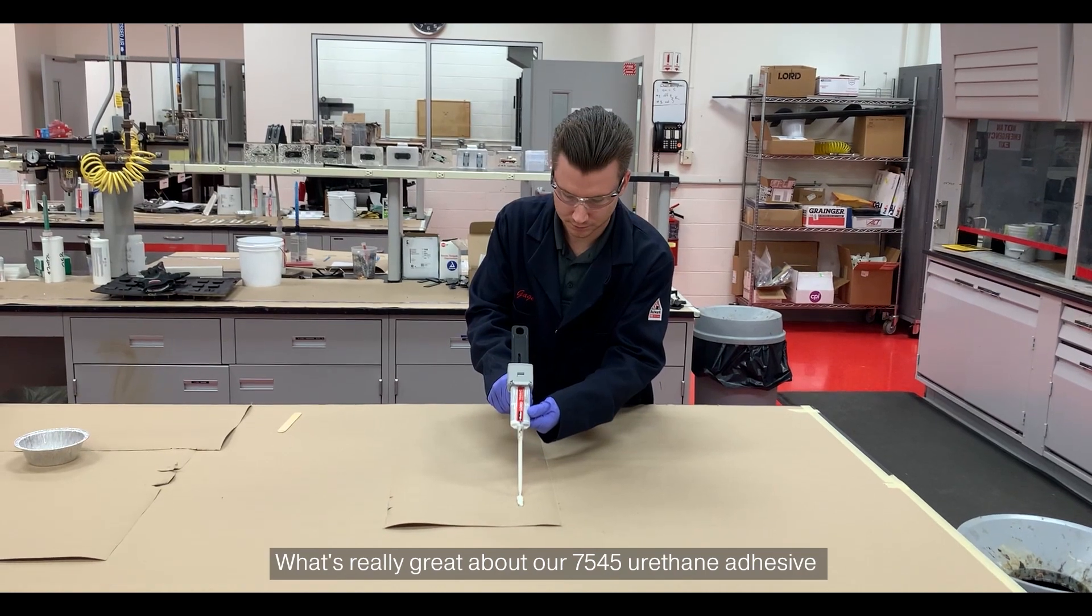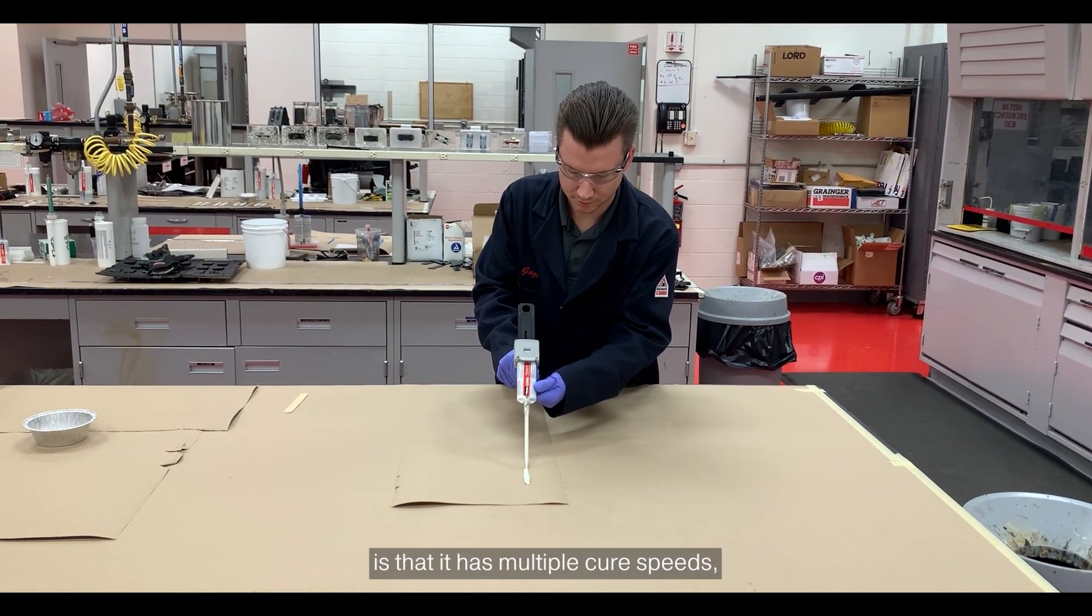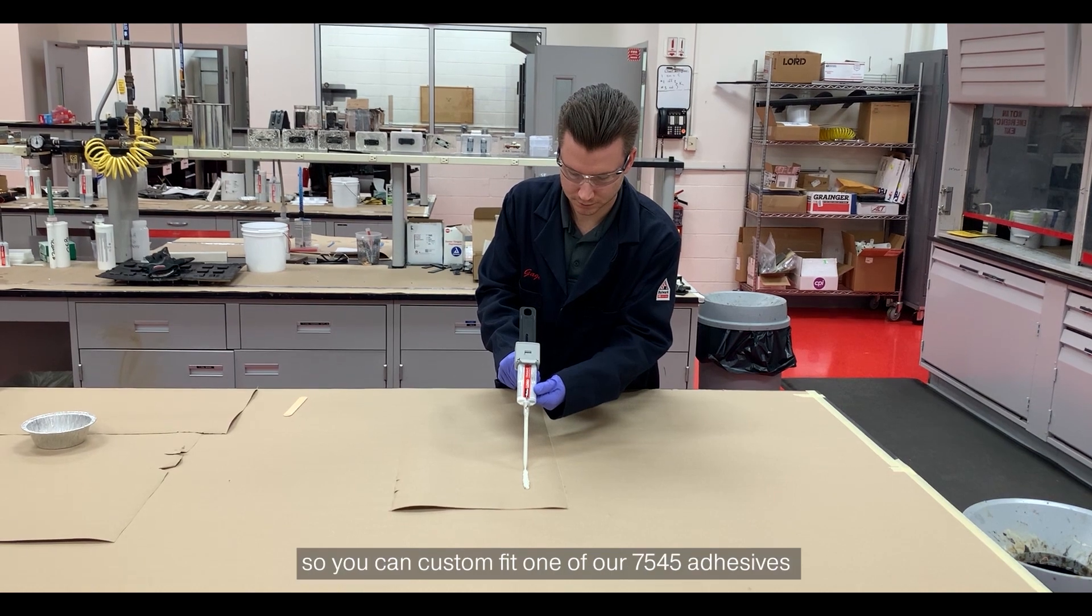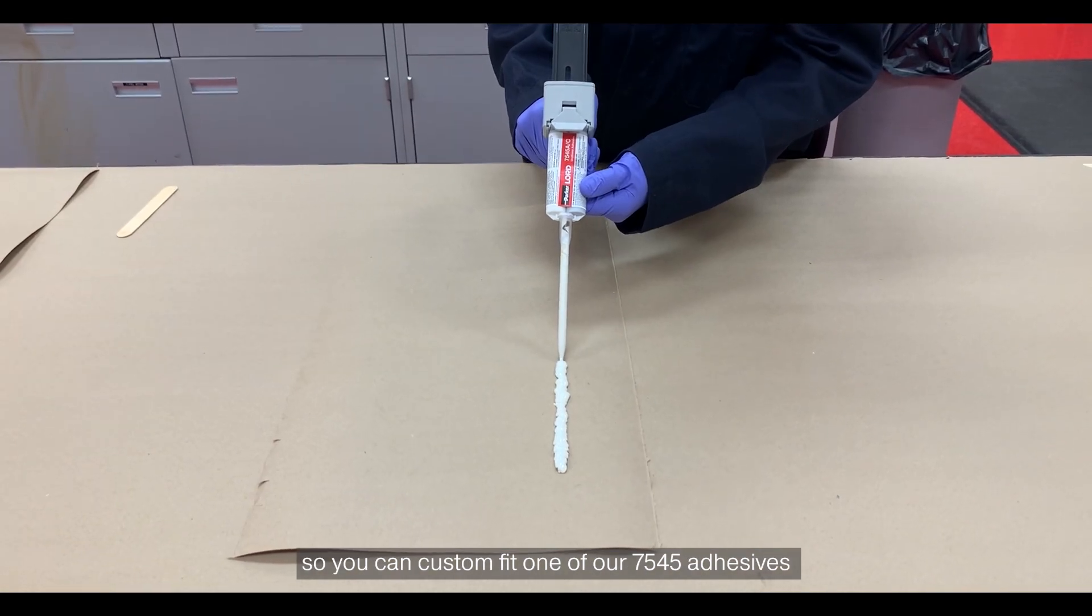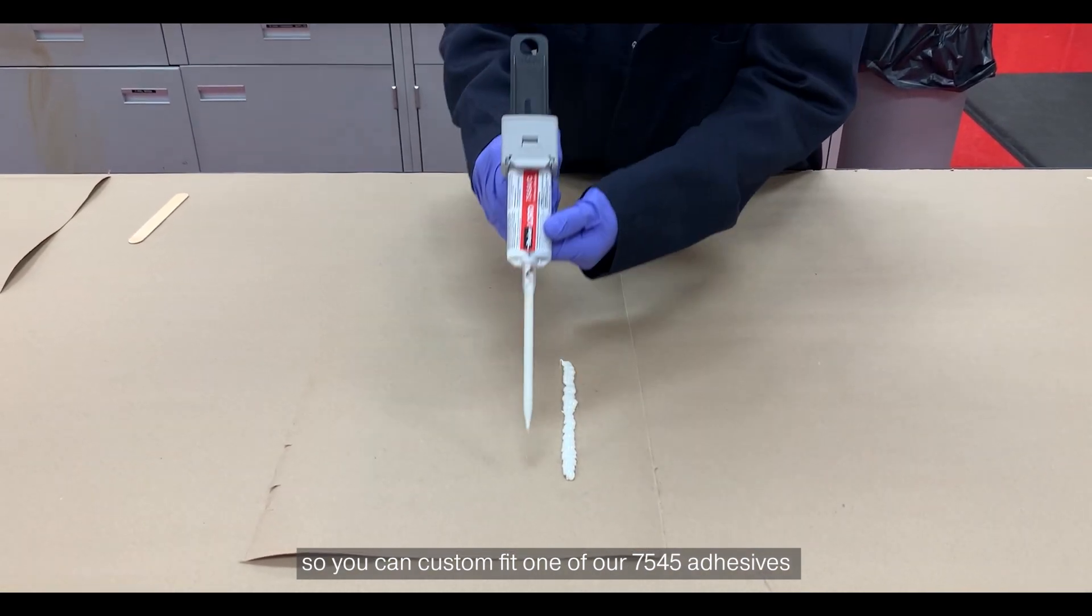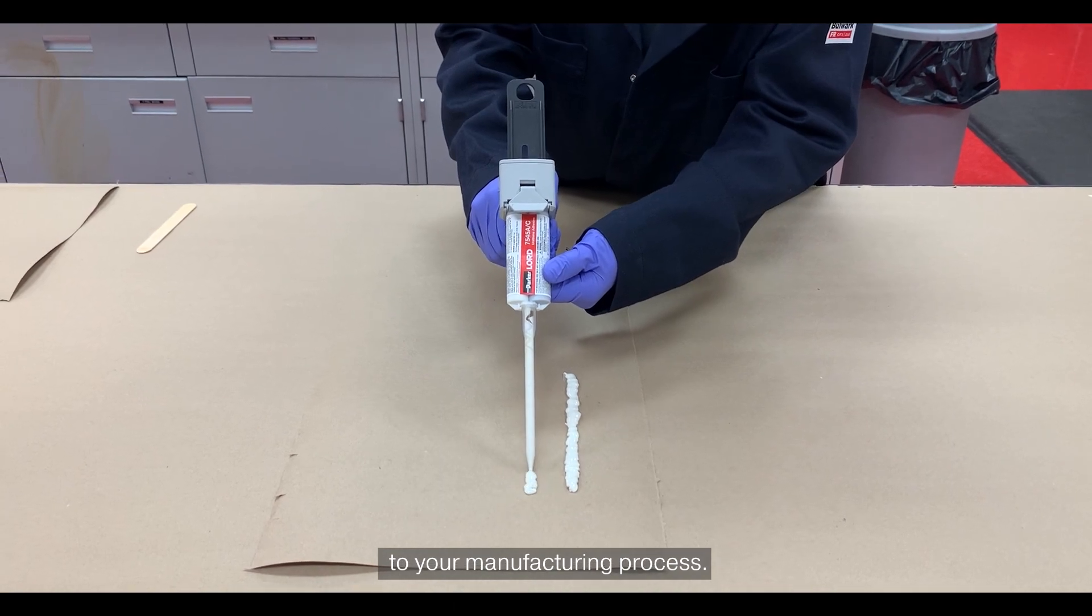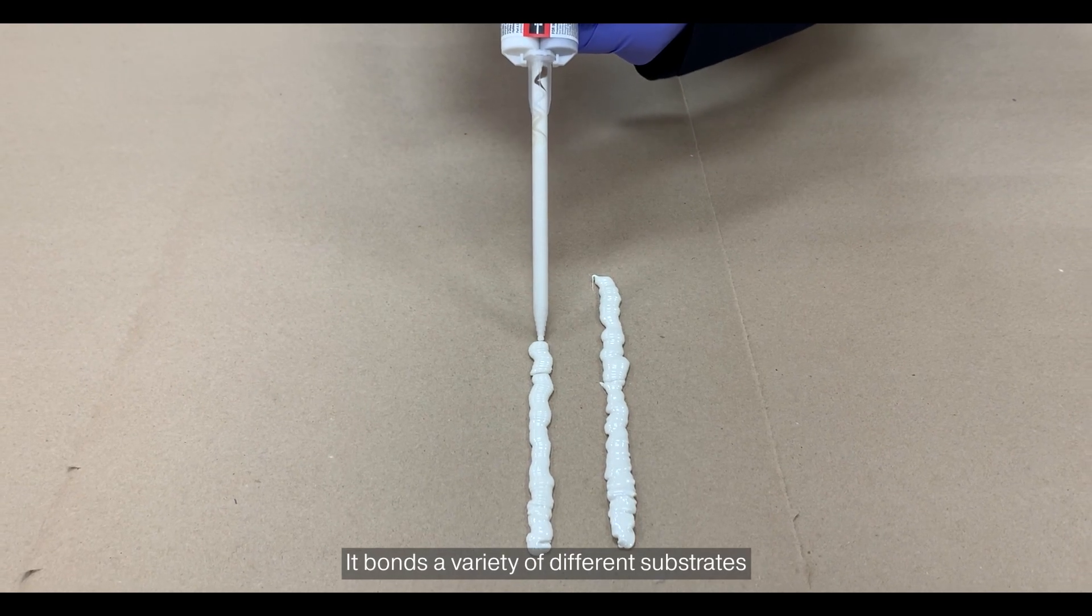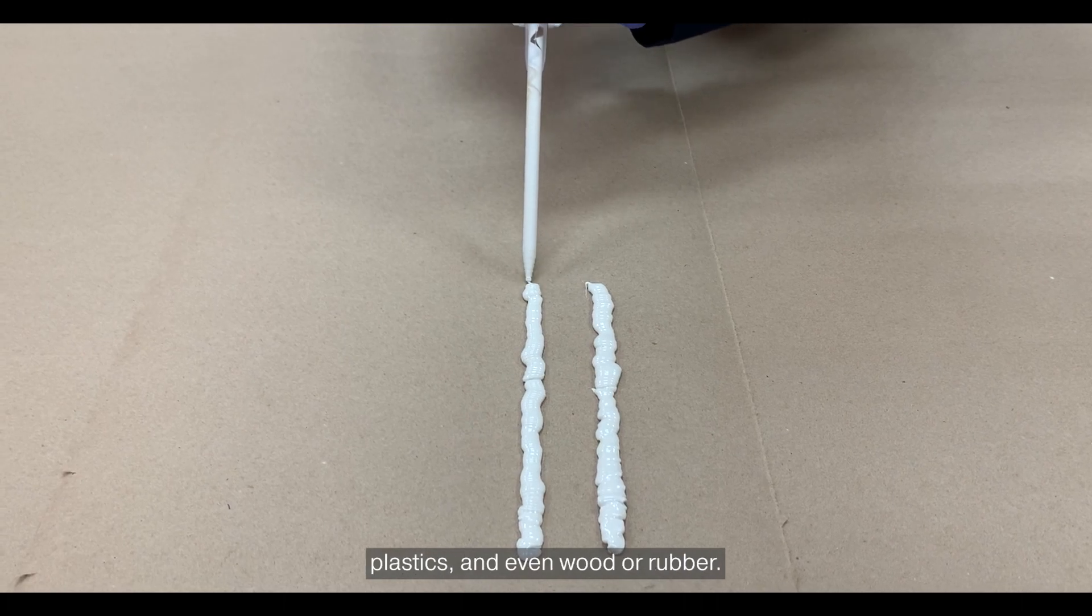What's really great about our 7545 urethane adhesive is it has multiple cure speeds so you can custom fit one of our 7545 adhesives to your manufacturing process. It bonds a variety of different substrates: coated metal, painted metal, plastics, and even wood or rubber.